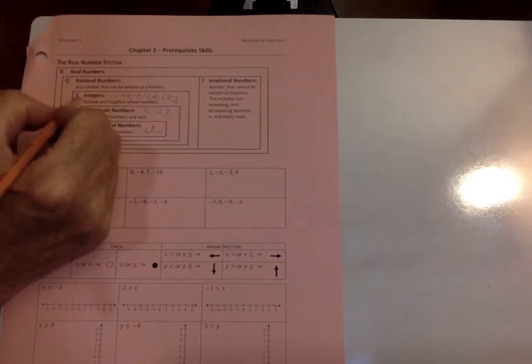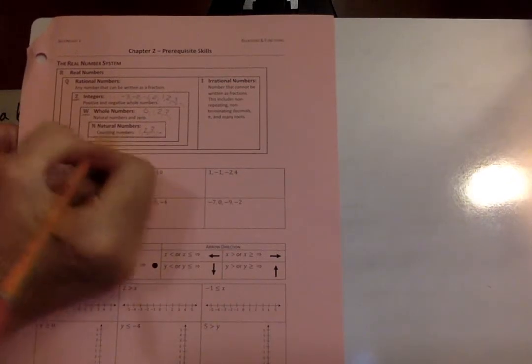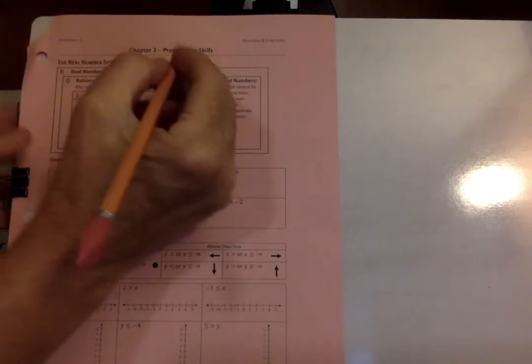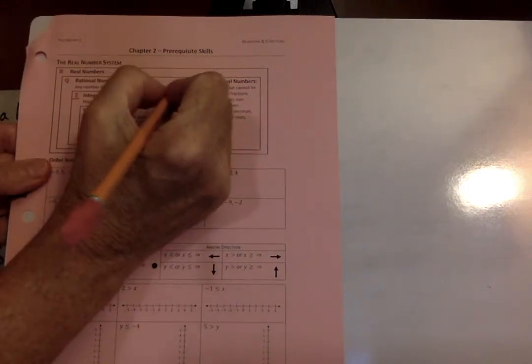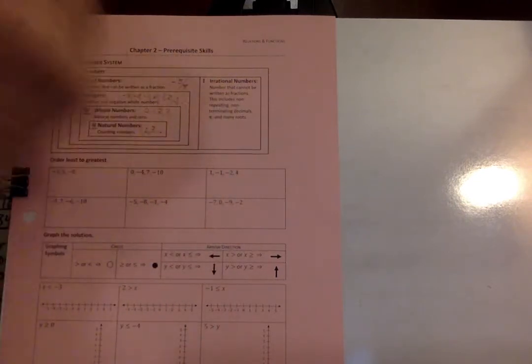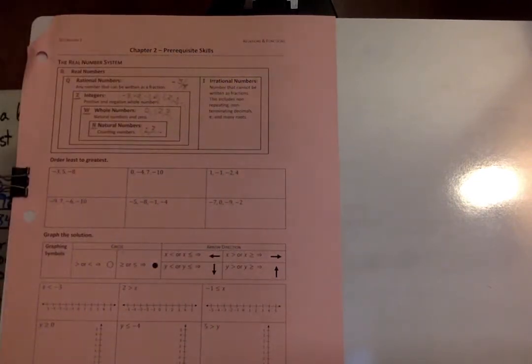Its symbol is Z. Whole number symbol is W. N is your natural numbers. Q is your rational numbers, and they are any numbers that can be written as a fraction: one-half, one-fourth, negative five-eighths. All of these are the rational numbers. So many, and they include all the integers, whole numbers, and natural numbers as well.